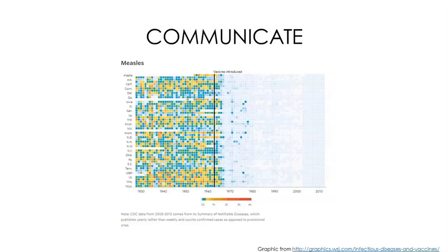Visualizations can also help us communicate ideas. This is one graphic from a series by the Wall Street Journal in 2015 about the prevalence of preventable diseases. The designers managed to show the granular year-by-year, state-by-state data, as well as the broad sweeping trend. We can see on this chart the profound and undeniable effect of the measles vaccine on public health all across the United States — although I think we may need an updated version to reflect these last six years.